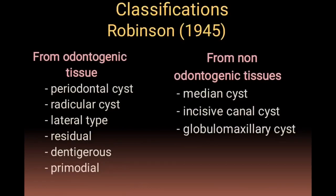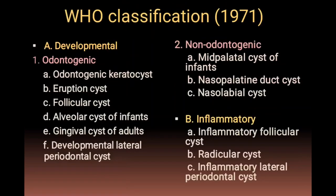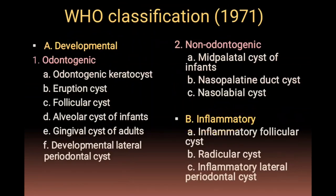Robinson classified cysts as odontogenic and non-odontogenic. Odontogenic cysts include periodontal, radicular, lateral, residual, dentigerous, and primordial cysts, whereas non-odontogenic cysts include median cyst, incisive canal cyst, and globulomaxillary cyst. The WHO classification is based on developmental and inflammatory types: developmental includes odontogenic and non-odontogenic, with additional types such as alveolar cyst of infants and gingival cyst of adults.